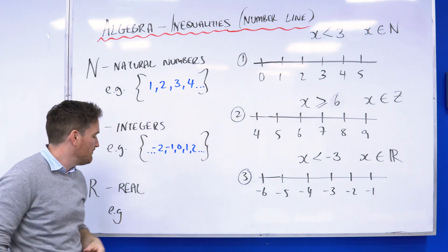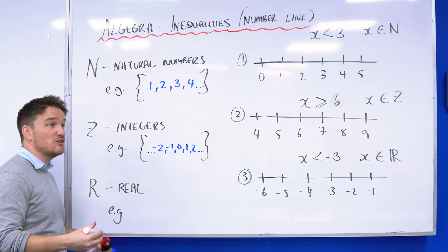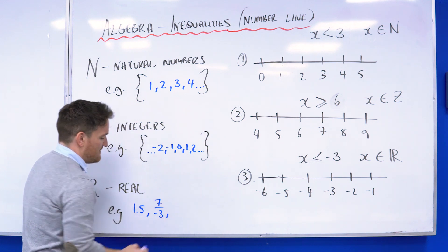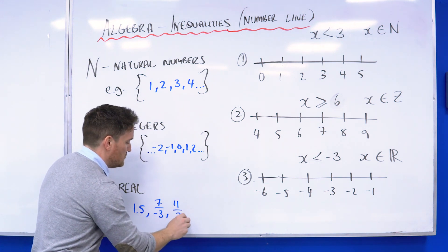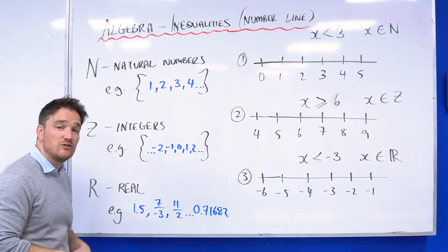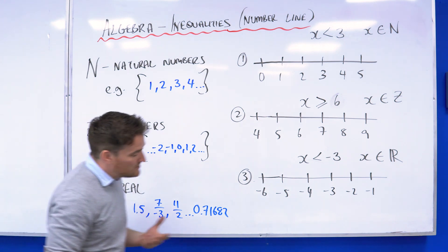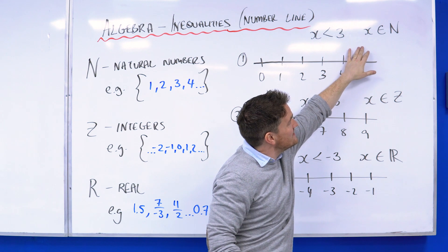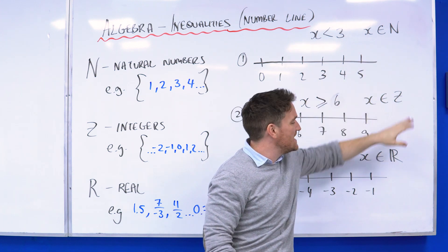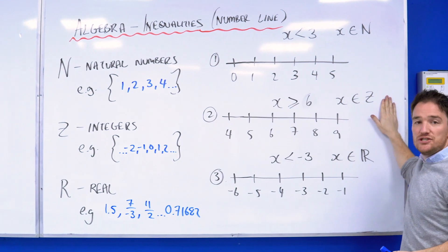Real numbers are pretty much any number in between — for example, 1.5, seven over minus three, eleven over two, 0.71682. It's every number in between; it doesn't have to be whole numbers, but it also includes whole numbers. When drawing inequalities, in your exam or test you'll see something like x with a symbol that looks like a weird 'e' followed by a letter. These say 'x is an element of N', 'x is an element of Z', or 'x is an element of R', meaning it's either a natural number, an integer, or a real number.